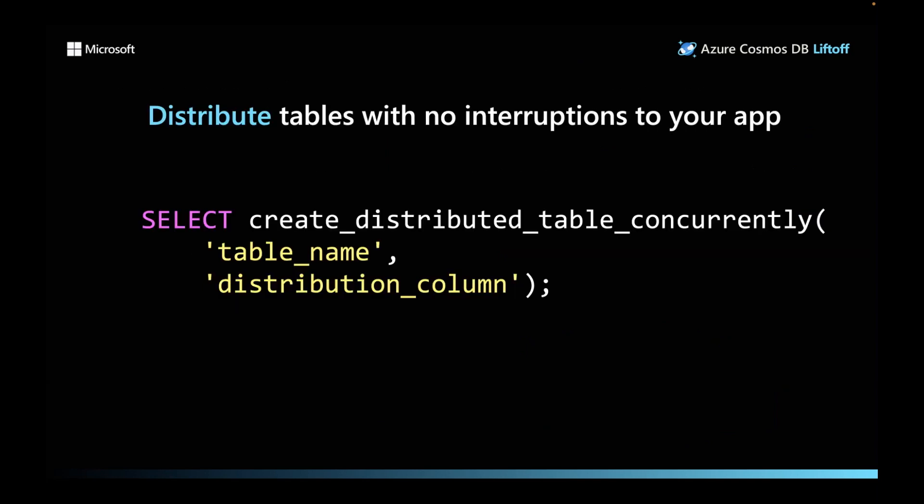Create distributed table concurrently is the magic function that Cosmos DB Postgres provides to distribute tables across multiple nodes. Distributing tables to scale out to multiple nodes is all online — reads and writes can go through as usual. Your app would have no impact when you distribute tables and scale out.